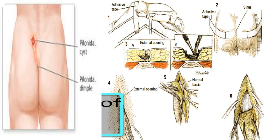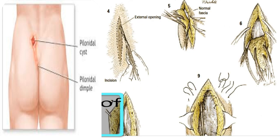A routine skin preparation follows after the skin is carefully shaved. An ovoid incision is made around the opening of the sinus tract about 1 centimeter away from either side. Firm pressure and outward pull make the skin taut and control bleeding.